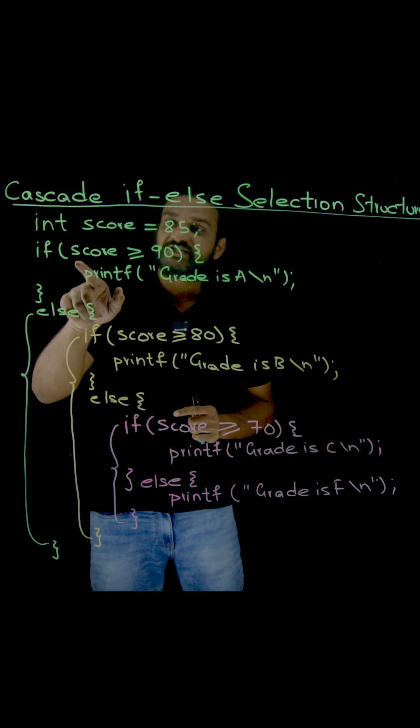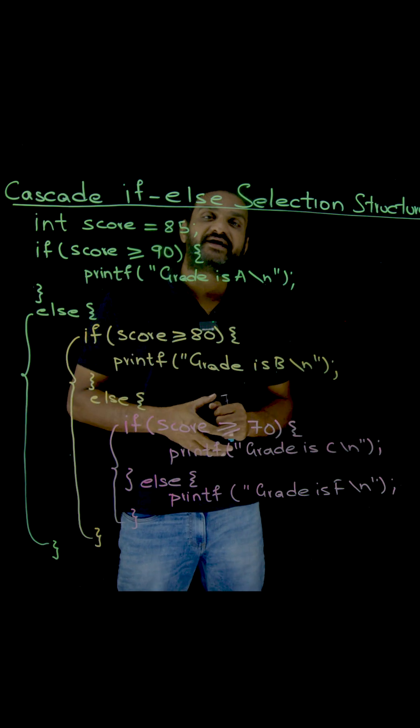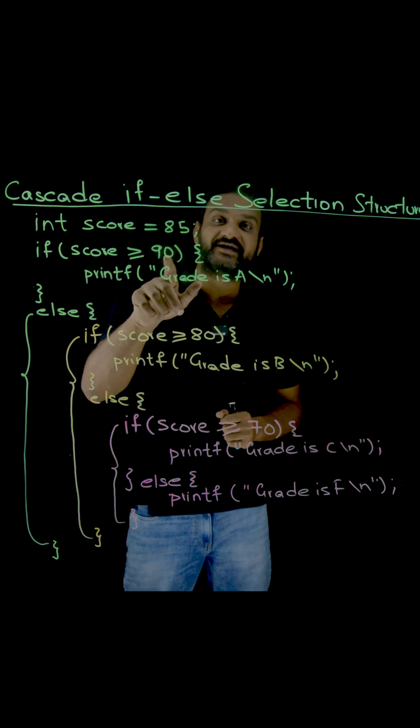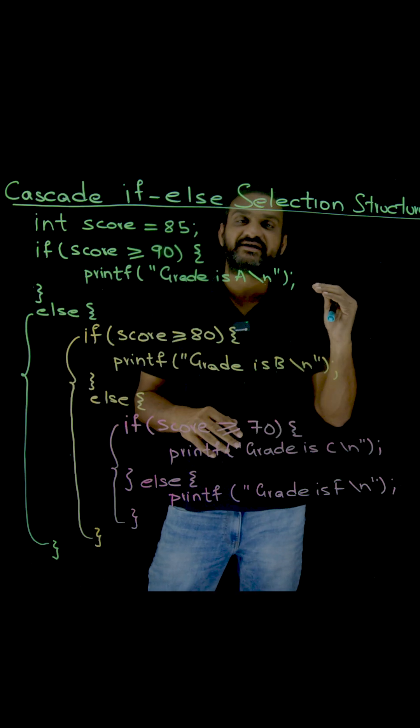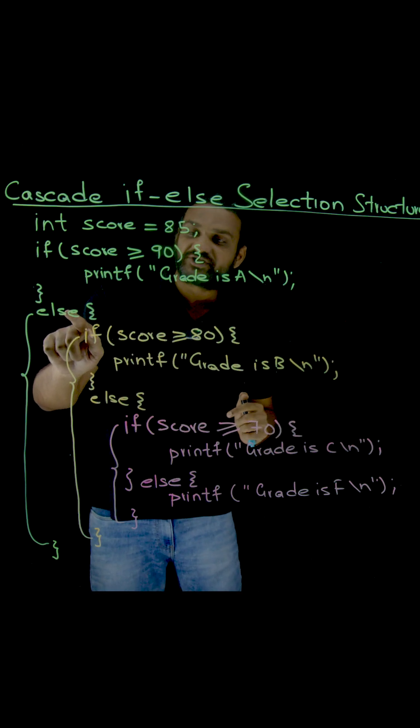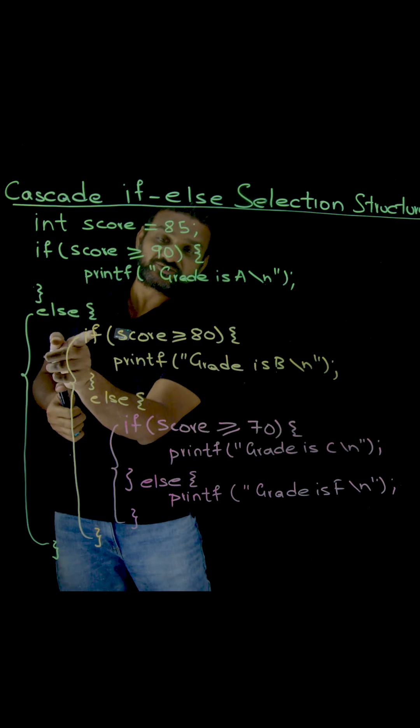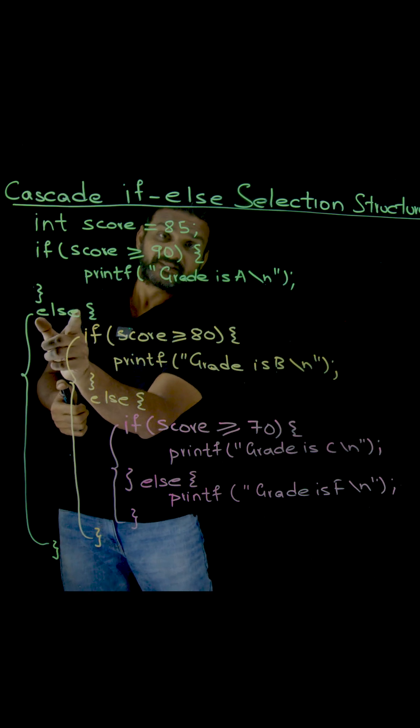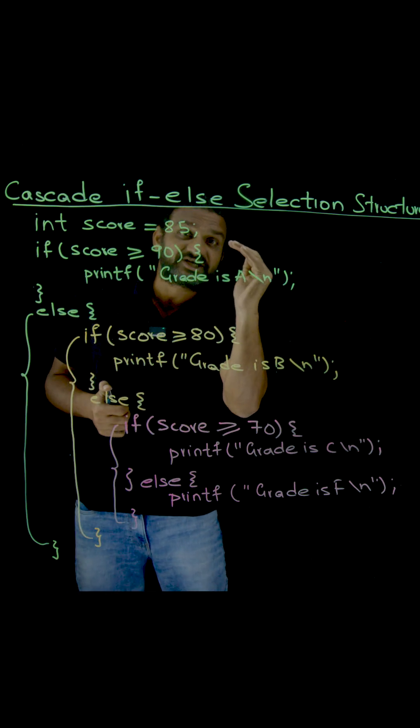Initially, is the score greater than or equal to 90? Is 65 greater than or equal to 90? No. So we are coming into this else part. Within this else part I am going to check this if condition. This is how sequentially we are going to write the if-else structures.